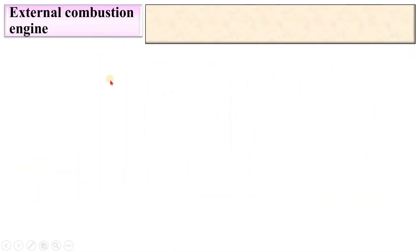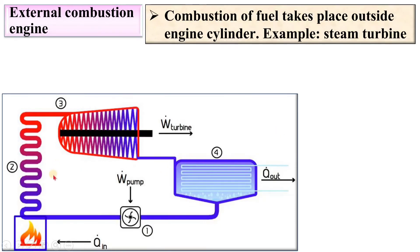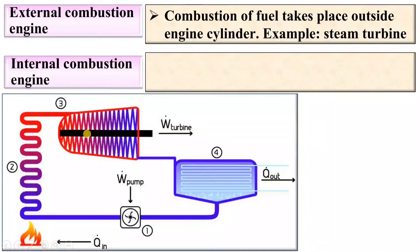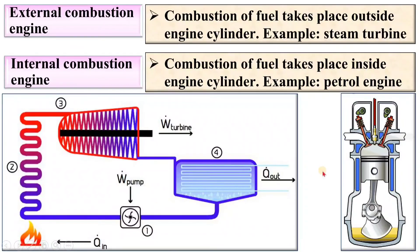In an external combustion engine, combustion of fuel takes place outside the engine cylinder — example: steam turbine. Here you can see combustion of the fuel takes place outside of the engine cylinder. In an internal combustion engine, combustion of fuel takes place inside the engine cylinder. Example is the petrol engine.